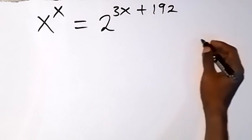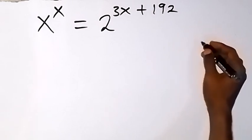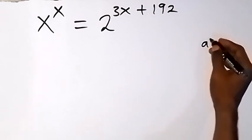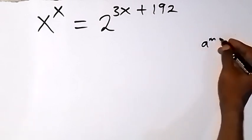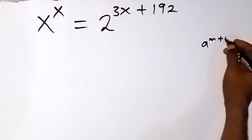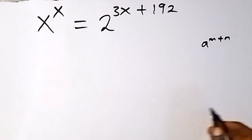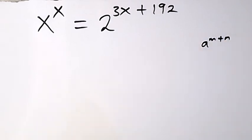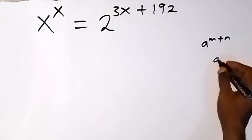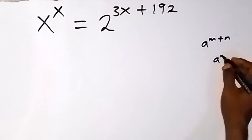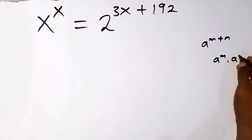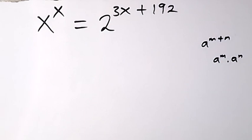When we have something of the form a raised to power m plus n, from the law of indices, we can separate this as a raised to power m multiplied by a raised to power n.